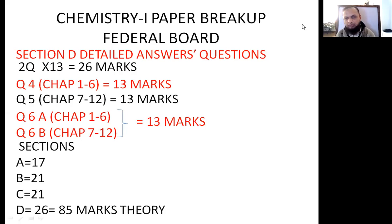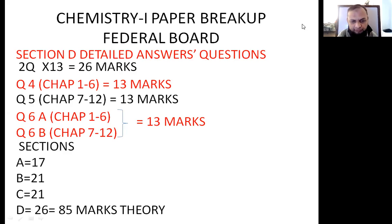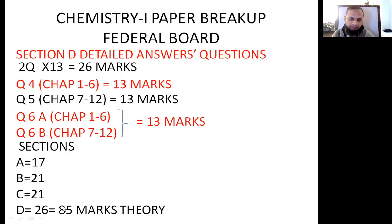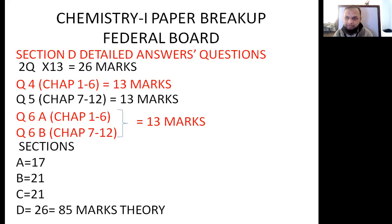So overall there are four sections: A, B, C, and D, with marks of 17, 21, 21, and 26 respectively — all making up 85 marks for your theory paper. Fifteen marks are reserved for your practical, but they are not tested this year; they will be tested combined in the next year.